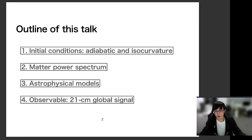And I would like to introduce astrophysical models in our calculation of the 21cm global signal. Finally, I talk about the 21cm global signal induced by the isocurvature perturbations and give a constraint on the isocurvature perturbations.